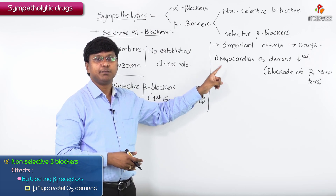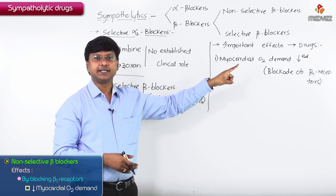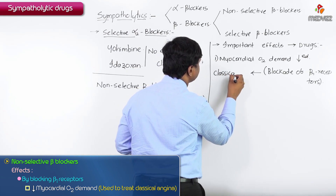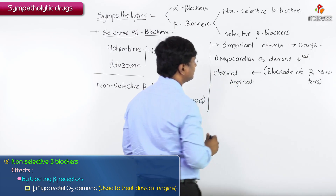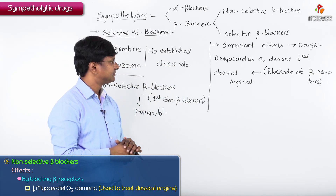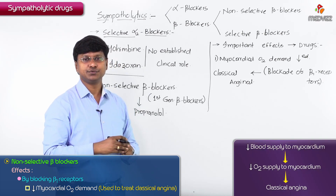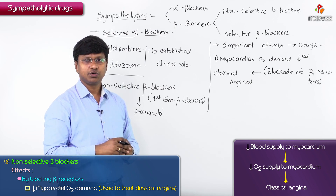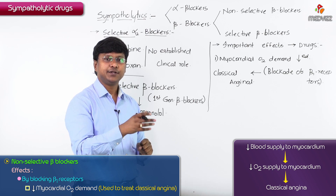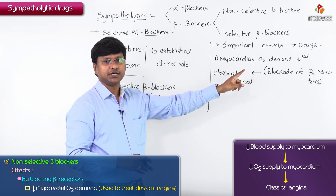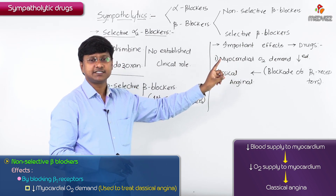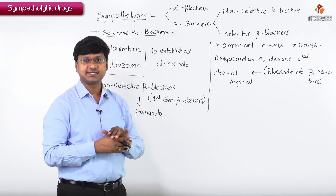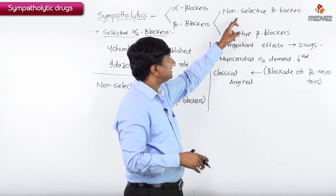The blockade of beta 1 receptors in the heart is useful in the case of classical angina. In patients with classical angina, the myocardial oxygen demand is increased and the blood supply to the myocardium is reduced. So giving beta 1 receptor blockers reduces the myocardial oxygen demand.